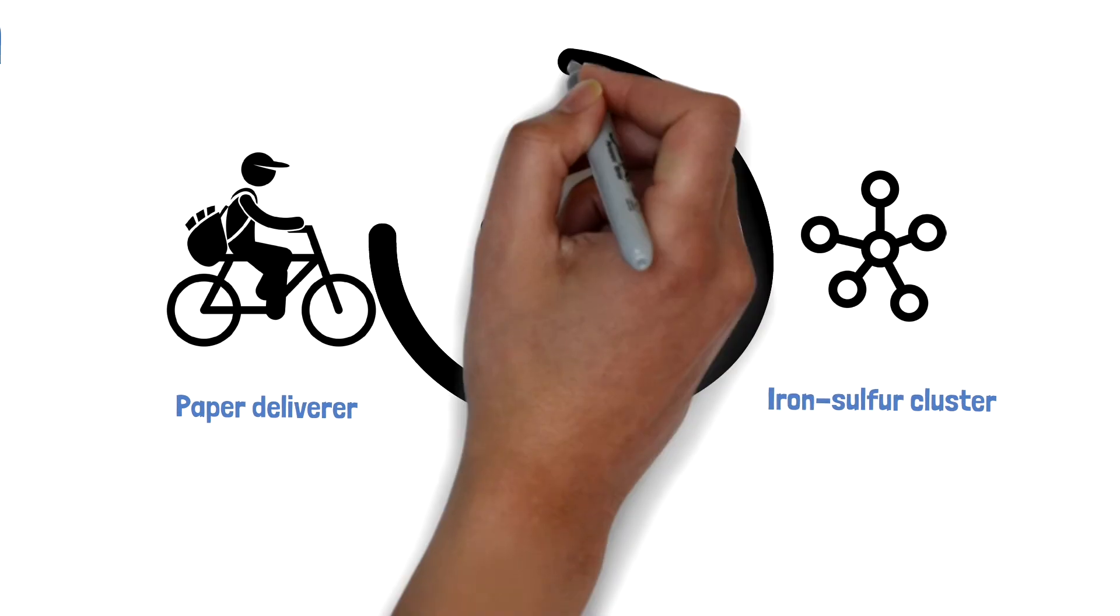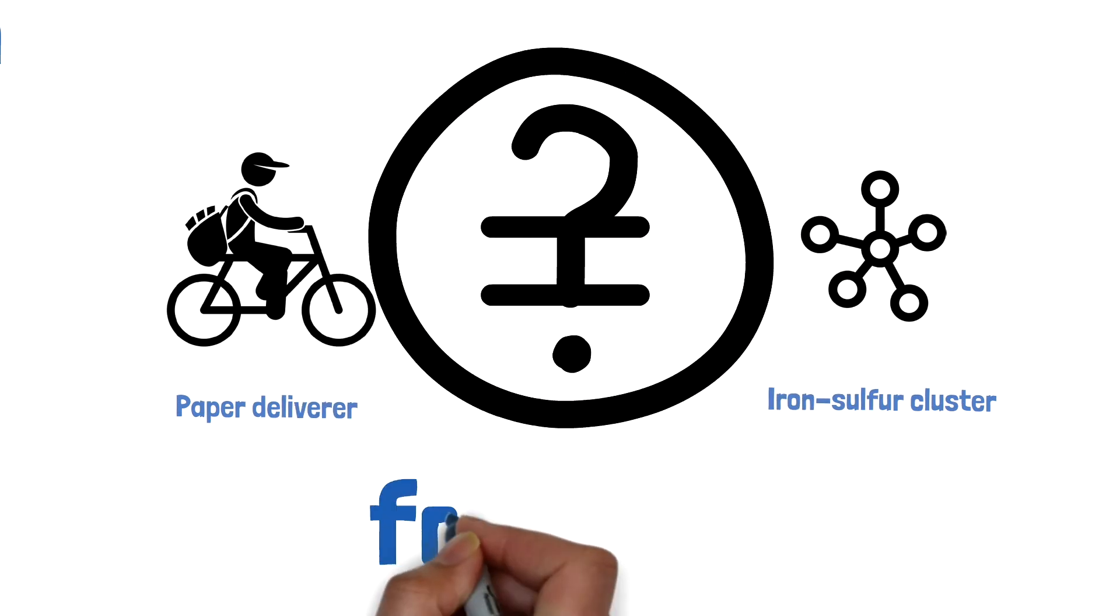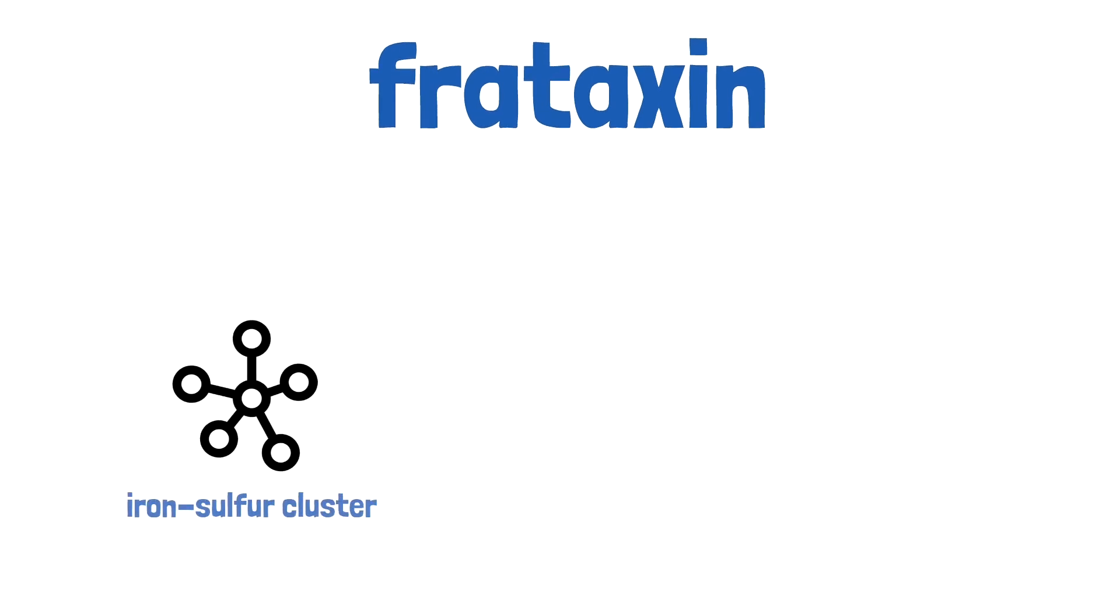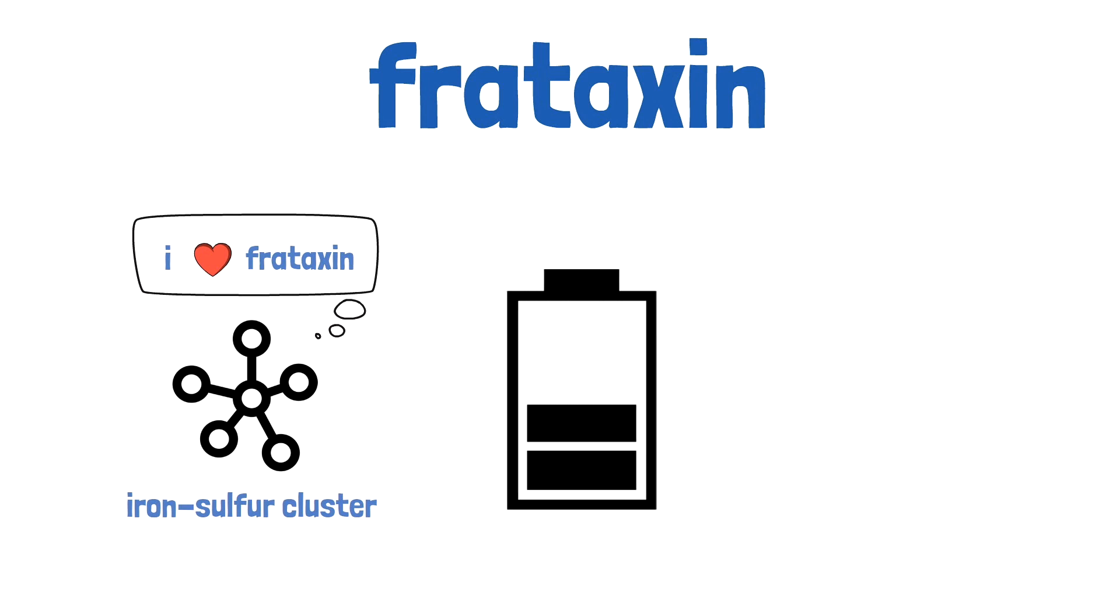At this point, you're probably wondering where frataxin fits into all of this. Frataxin, the protein deficient in FA, is critical for assembling these iron-sulfur clusters, or electron shuttling paperboys. Without enough frataxin, there are not enough iron-sulfur clusters, so not enough energy is produced.